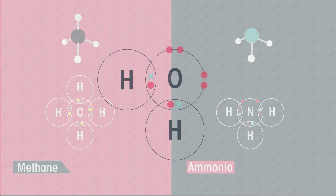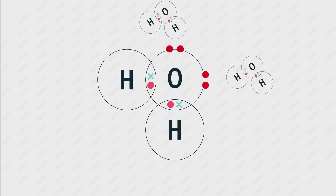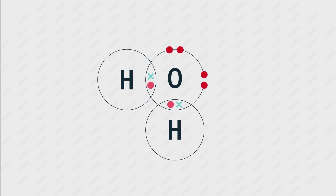The water molecule is bent in shape. Oxygen has two lone pairs. Negatively charged lone pairs are slightly attracted to the hydrogen atoms, so there is a weaker attraction between molecules. Forces between molecules are a little stronger in water than in ammonia or methane.